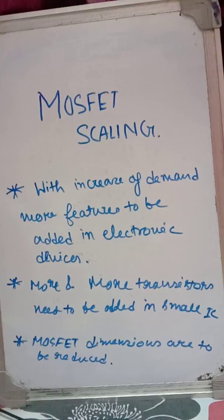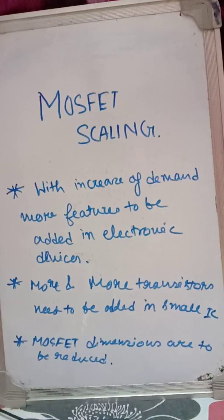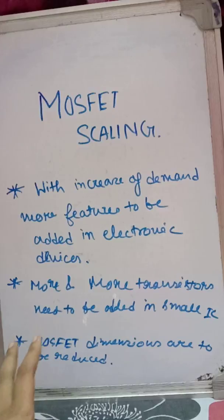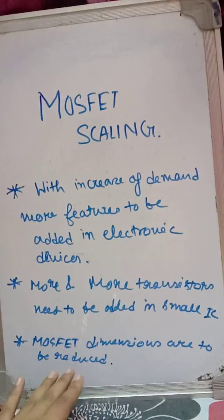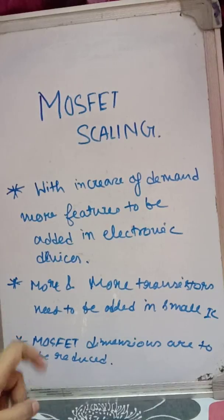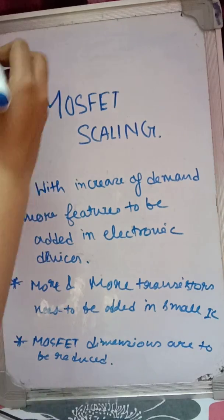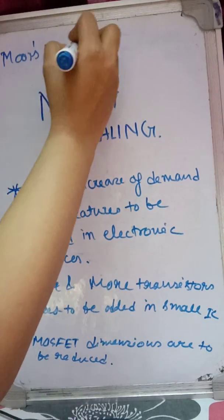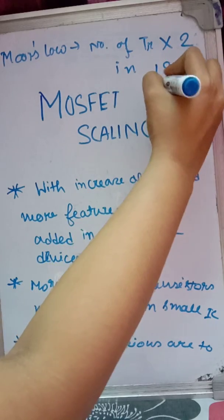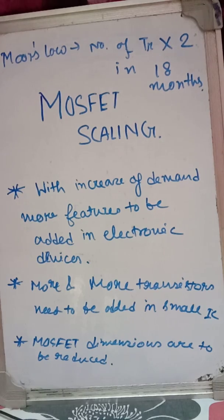So, demand is increasing for new features and when new features are to be added we need more transistors in the small IC. We also need the dimension of the MOSFETs to be decreased — these are all linked. When we try to reduce the dimension of any MOSFET, that technique is known as MOSFET scaling. We also know from Moore's Law that the number of transistors doubles every 18 months.